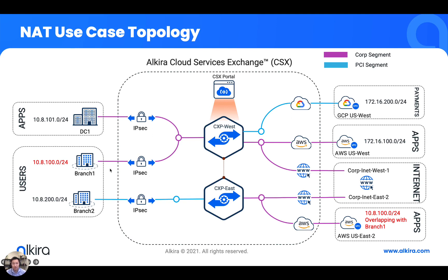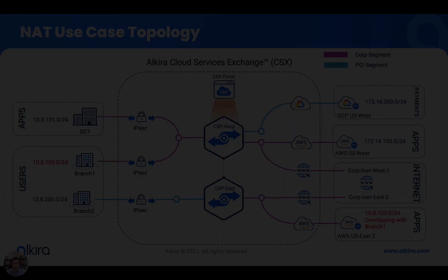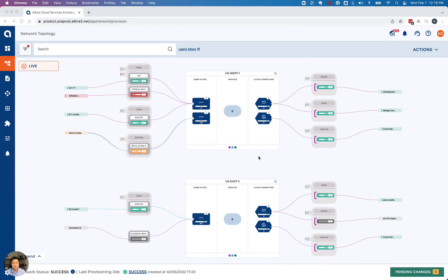Here I have a DC one on 10.8.1.0/24, and then branch one, which overlaps with a VPC in AWS — both have 10.8.100.0/24. We're going to show you on the Elkira portal how the configuration looks, and also show you the diagnostics and the real-time traffic flow. Here's a live environment mimicking the topology we showed, which we have also used in previous episodes.